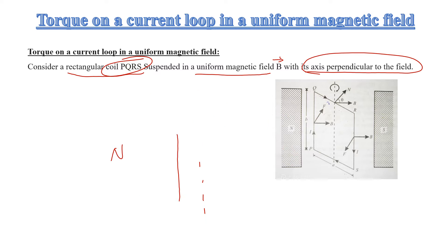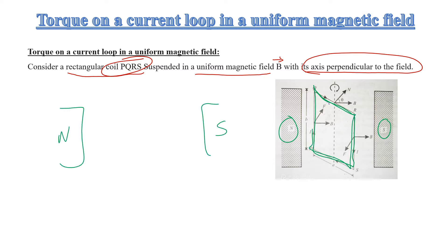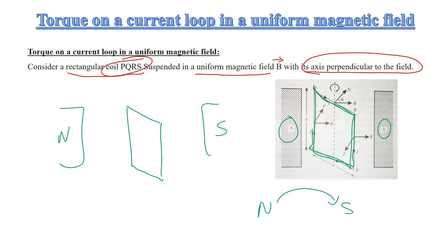First, we need to understand the diagram. We have two magnets — north pole and south pole. We keep the coil between them. Magnetic field always moves from north to south pole. The current direction is shown as I. The magnetic field B moves from north to south pole, so the direction is clockwise. Two things are now clear: current I and magnetic field B.